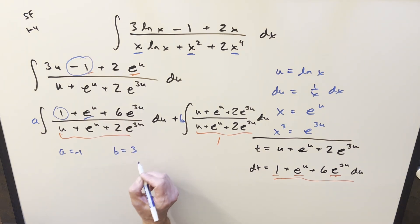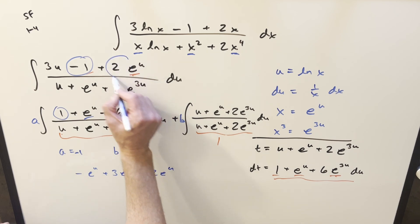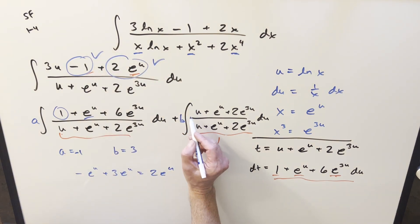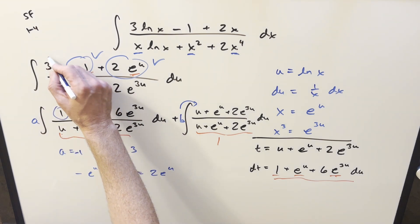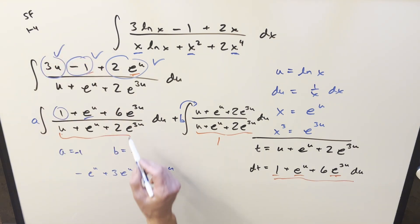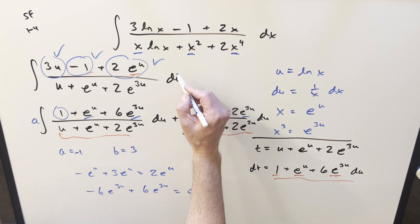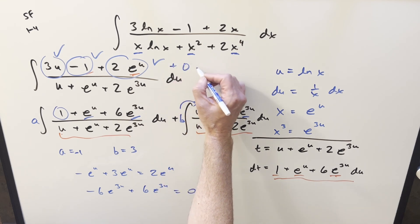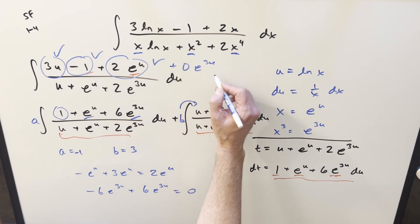because when we do this, just focusing on e to the u, we're going to have minus e to the u plus three e to the u. This is going to be two e to the u. That's going to match this piece right here. Notice on this u term, you multiply in three, you get the three u right here. So that's good. What about the e three u's? We don't even have that here. You multiply in a as minus one. You have minus six e three u. Multiply in the b plus three times two is six e three u. This equals zero. So we can think of this as like zero e three u, and that works as well.